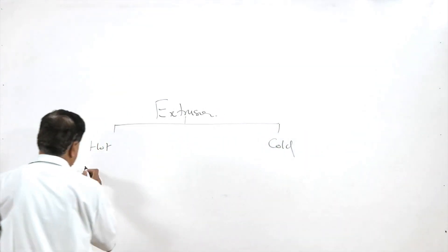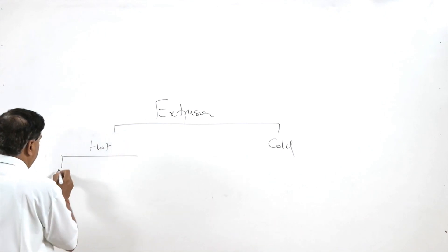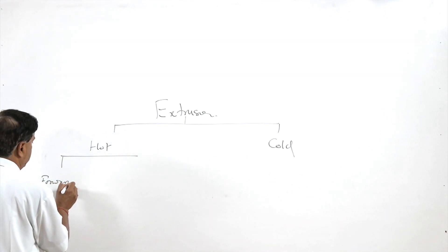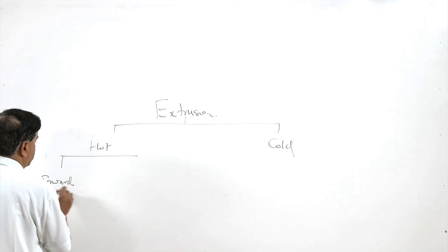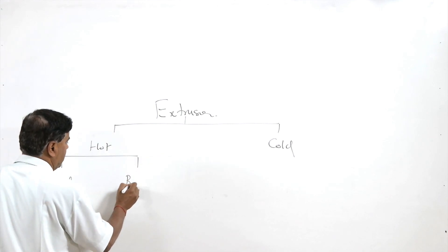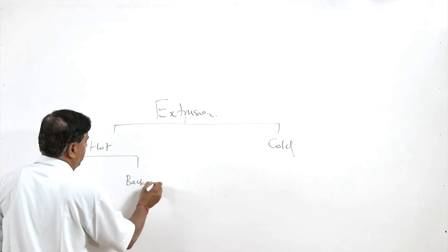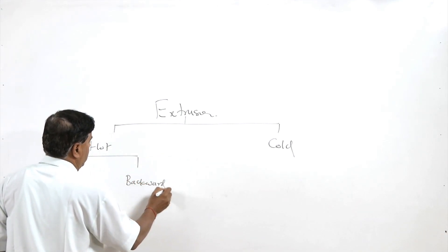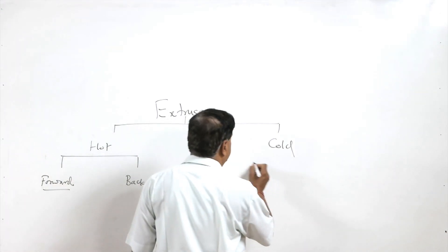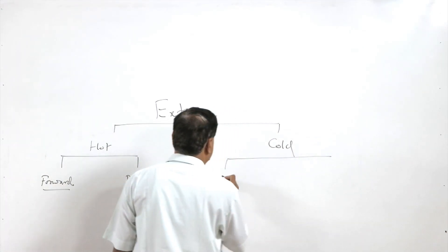In hot extrusion variants, again we have forward extrusion and backward extrusion. In cold extrusion, the temperature of the billet is below the recrystallization temperature.